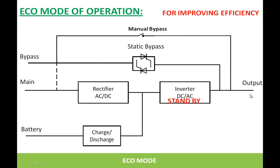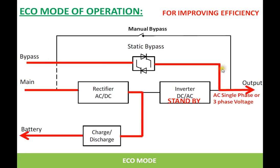The other mode is the echo mode of operation. Some UPS units have this mode for improving the overall efficiency of the UPS system. The inverter's job is converting DC to AC, and this operation is not 100% efficient because there are losses during conversion. In order to improve efficiency in this mode, the inverter is kept in standby under normal conditions. Whenever incoming power is available, the output is fed through the static bypass switch while the inverter is on standby, so there are no losses in the inverter.